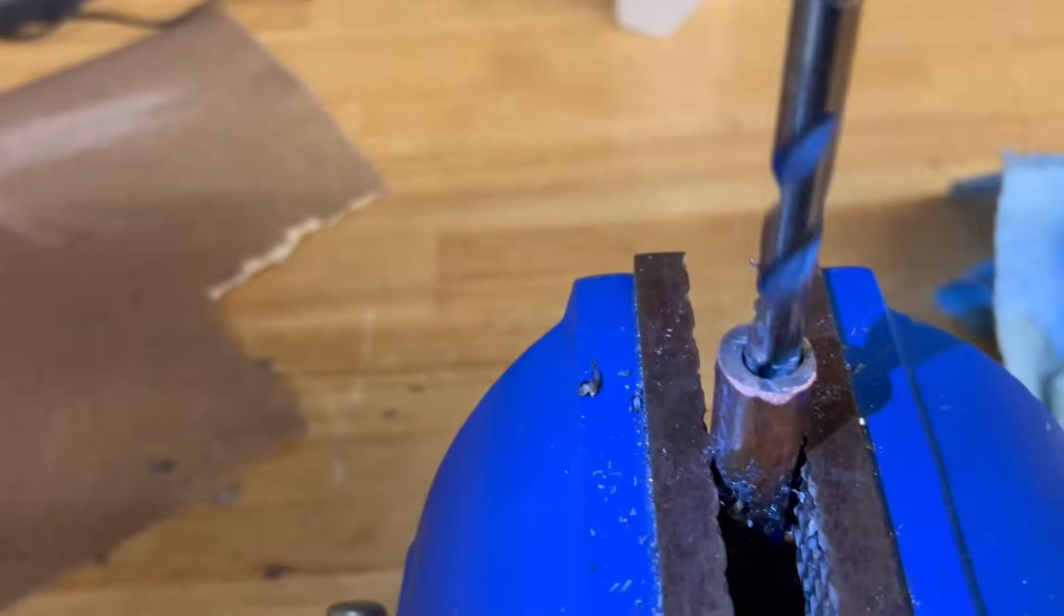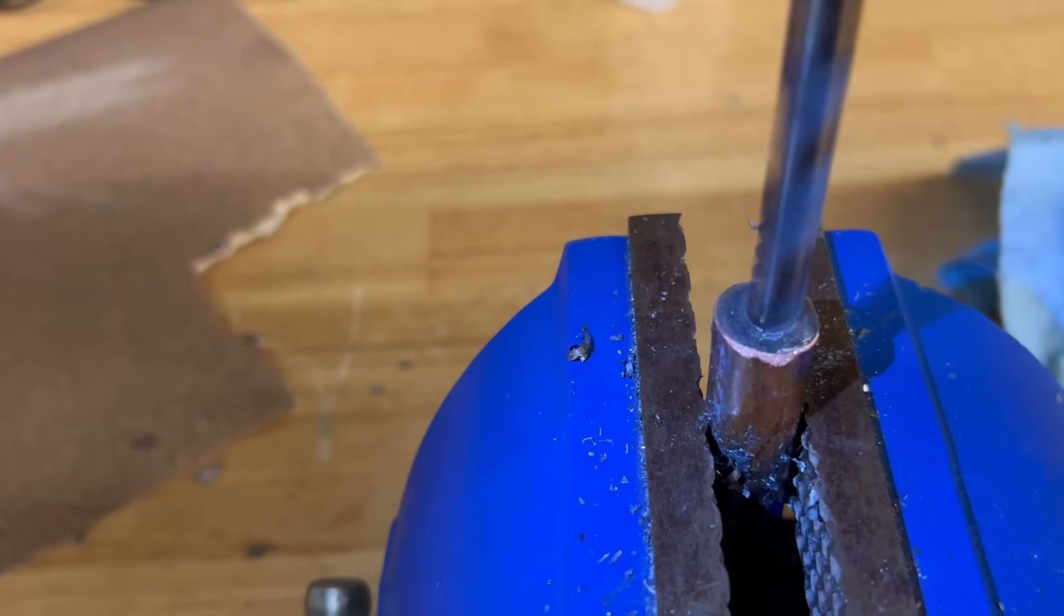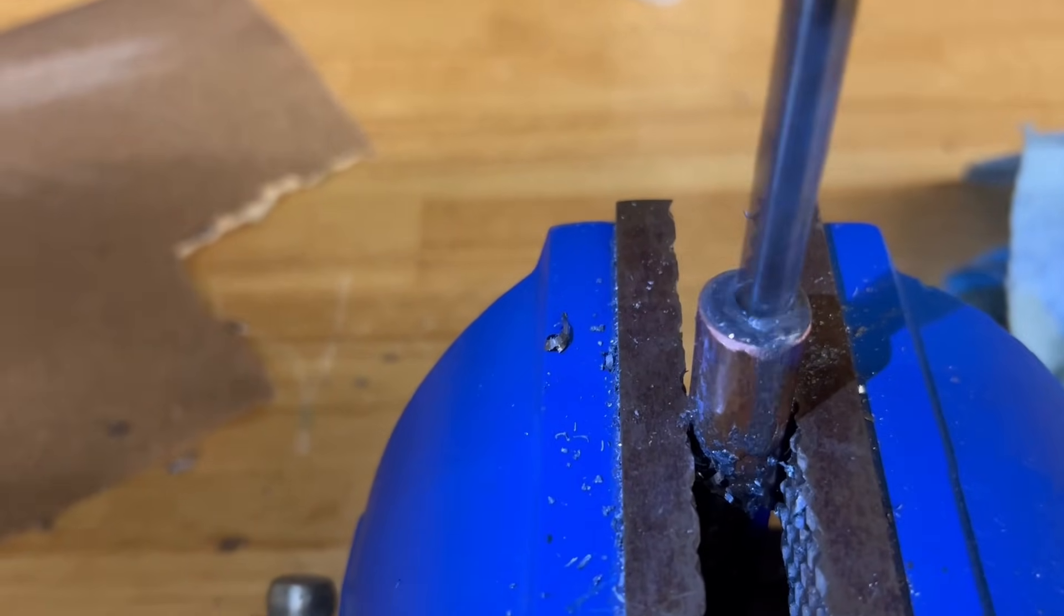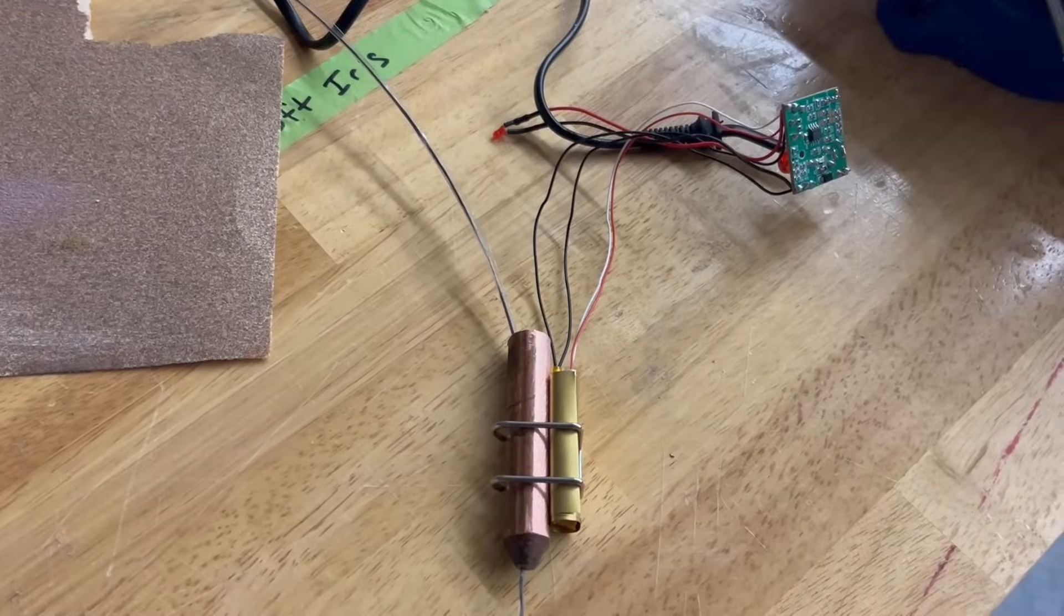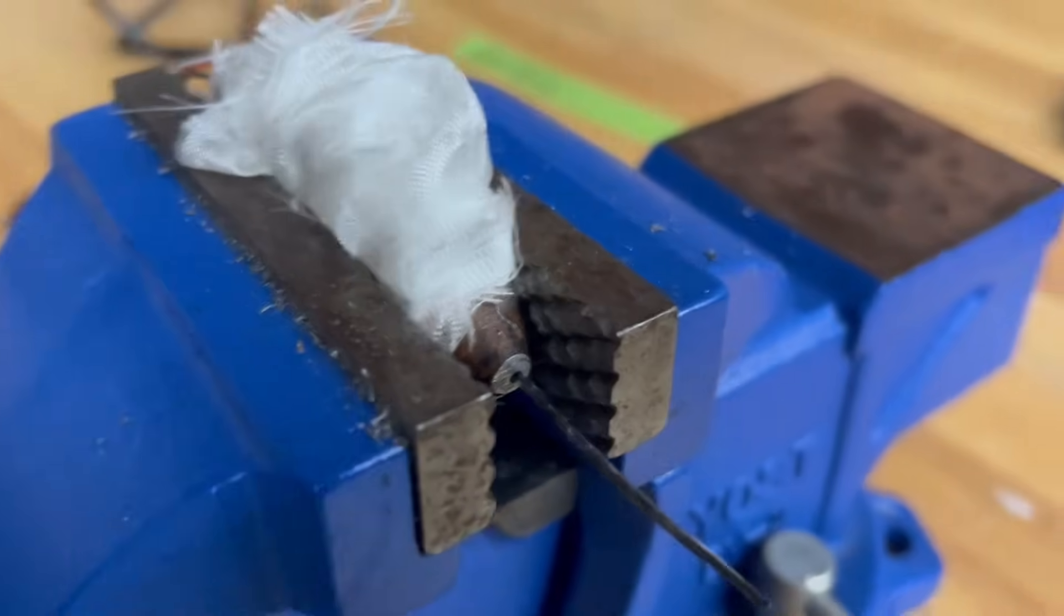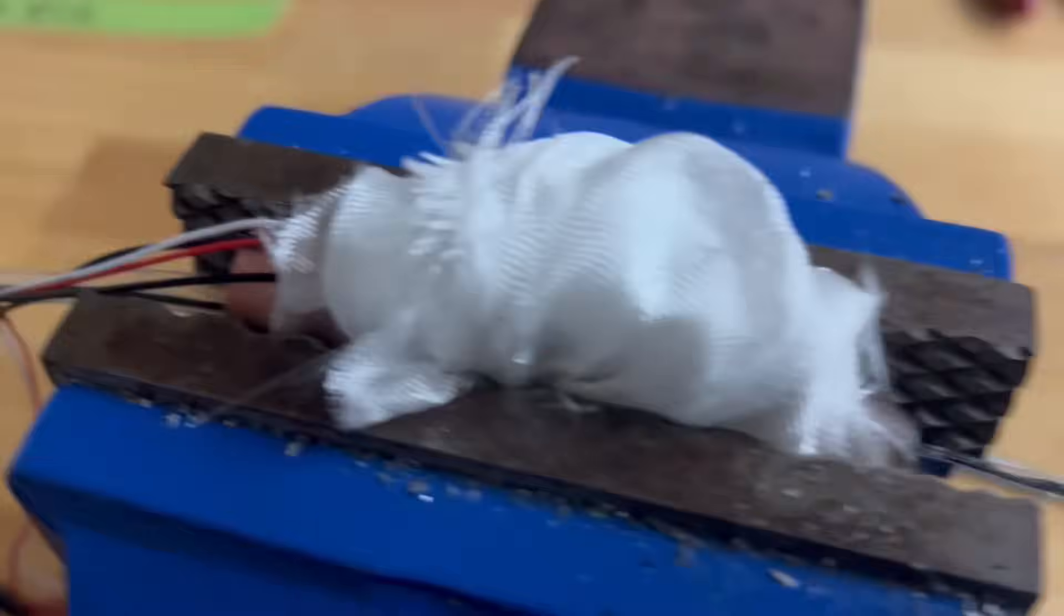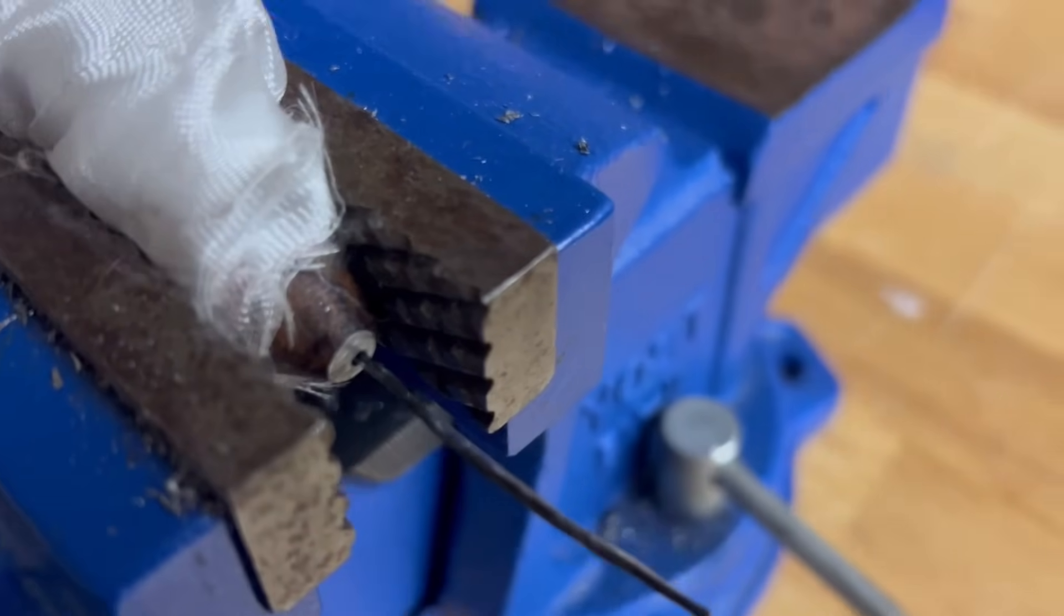But I still have a problem, and that is my filament is too big, so I need to make a smaller nozzle. But this nozzle was a total failure. The filament just wouldn't pull through it, so instead I switched back to a different hot glue gun, but instead I just extracted its guts.